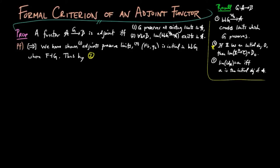Thus, by 2 on the right, the limit of UB is the object FB in the category A.